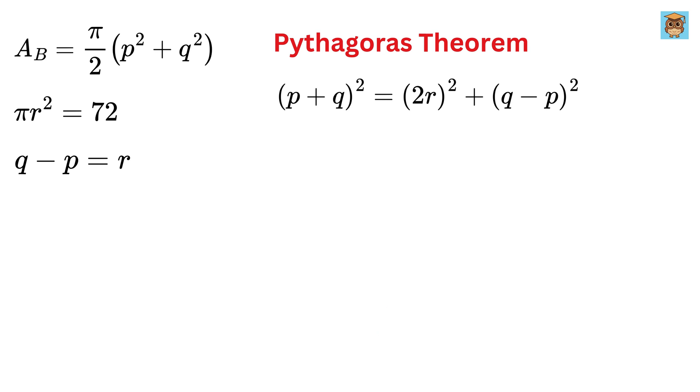Let us expand them. Expanding this, we get P² + 2PQ + Q² equals 4R² + Q² - 2PQ + P². Oh, look, P² and Q² appear on both sides, so cancel them.